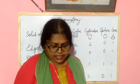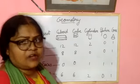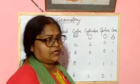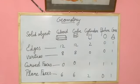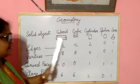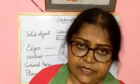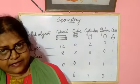So, what have you seen today? Today you have learned about solid objects: cuboid, cube, cylinder, sphere, and cone — these are all solid objects. When you trace these solid objects, what will you get? A plane figure. When you trace any solid object, you will get a plane figure.